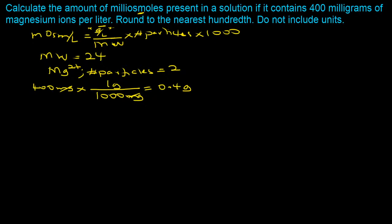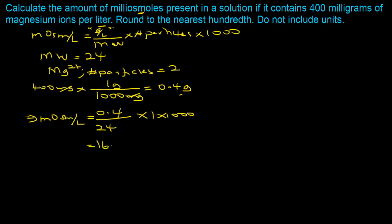Plugging into the equation: milliosmoles per liter = (0.4 ÷ 24) × 1 × 1000. If you have any questions, put them in the chat or comments. Doing the math gives us 16.67. The question says round to the nearest hundred and do not include units, so our answer is 16.67.